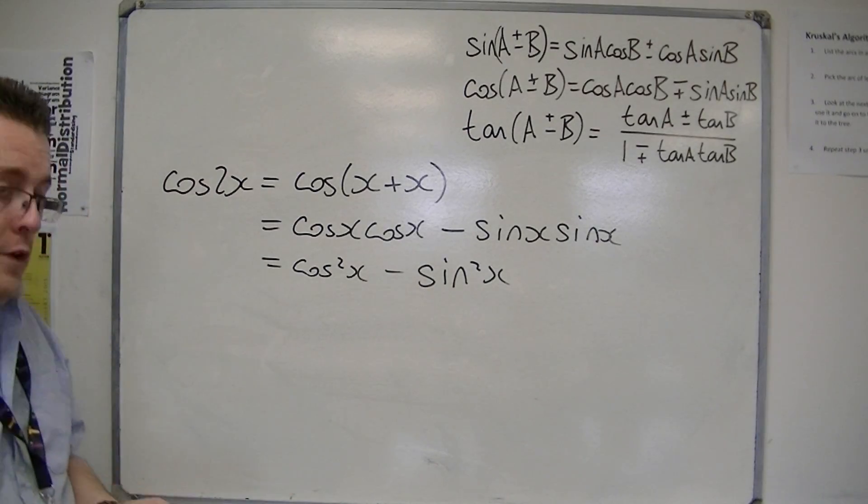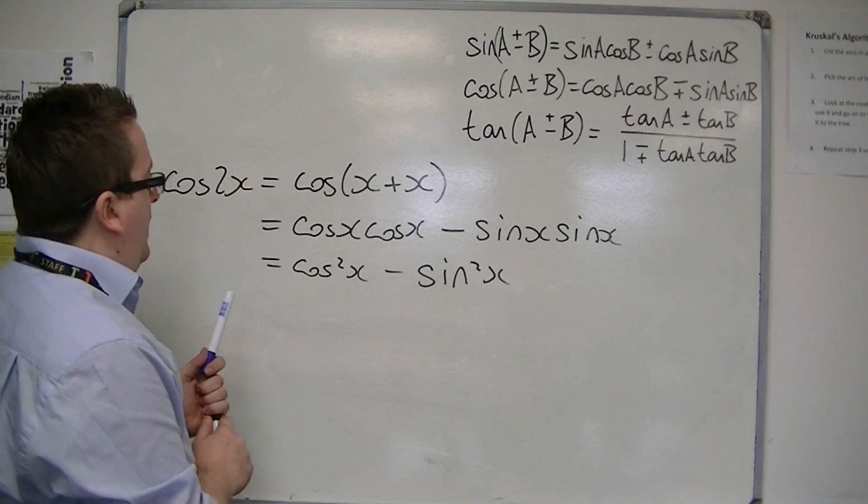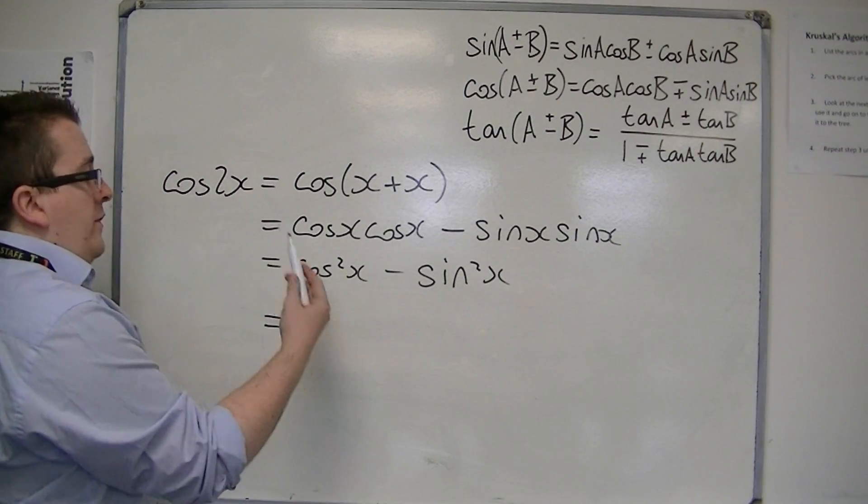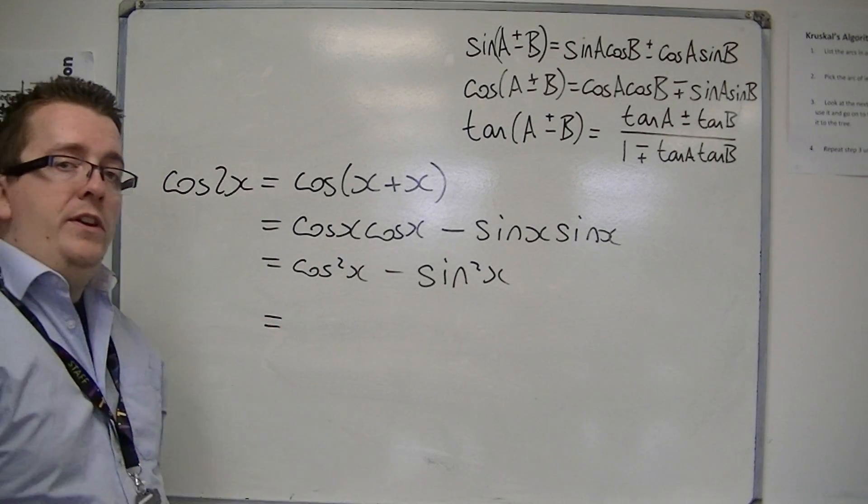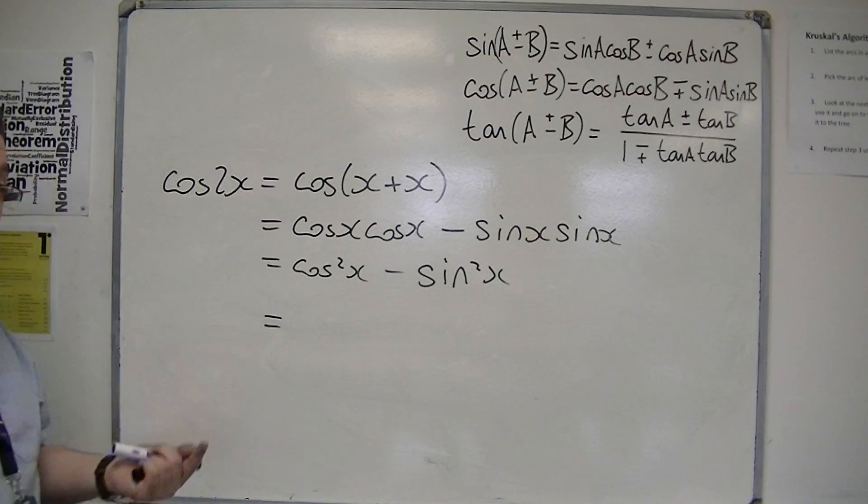Now there are two other variations of this, and they can be found by replacing either the cos squared or the sin squared, to write it in terms of sin squared or cos squared.